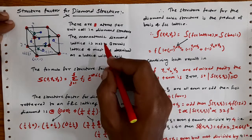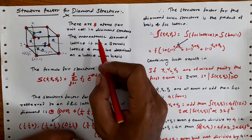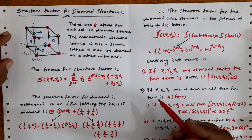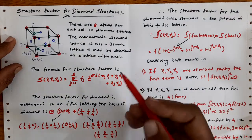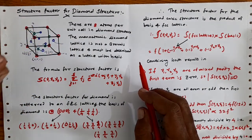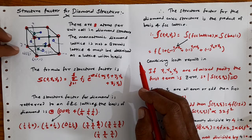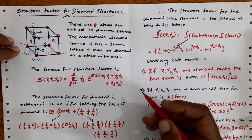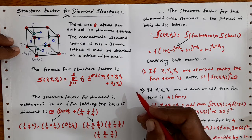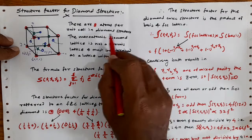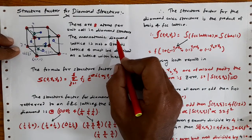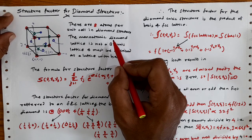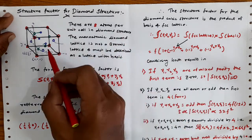Hello friends, today we are going to talk about the calculation of the structure factor for the diamond structure. The diamond structure is a cubic structure composed of two interpenetrating FCC lattices. It has eight atoms per unit cell, and we will explore how they are placed in the unit cell and why it is so compact.